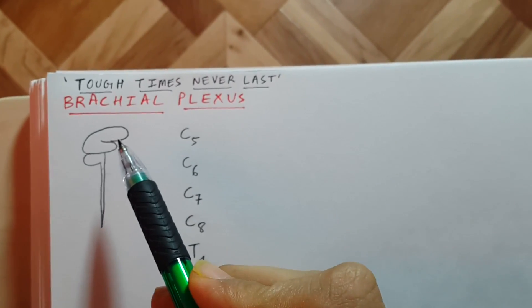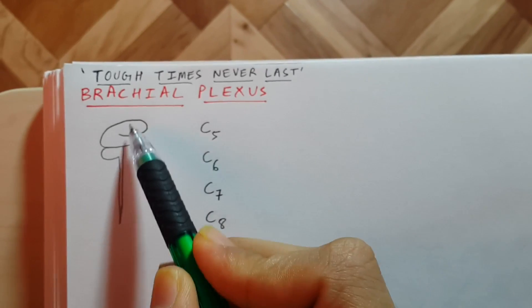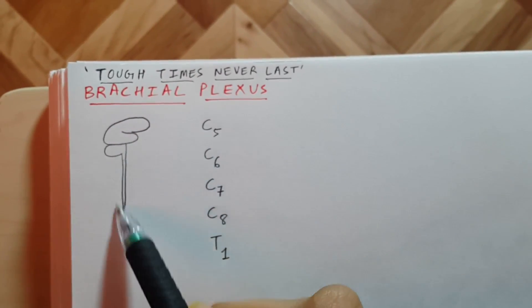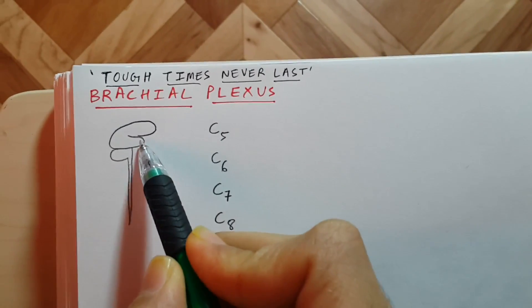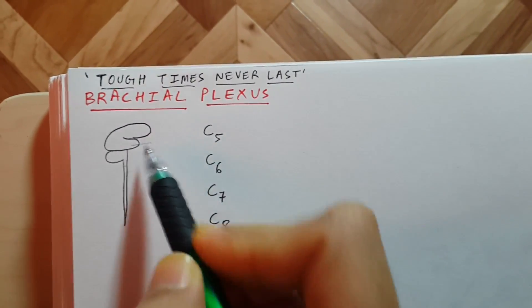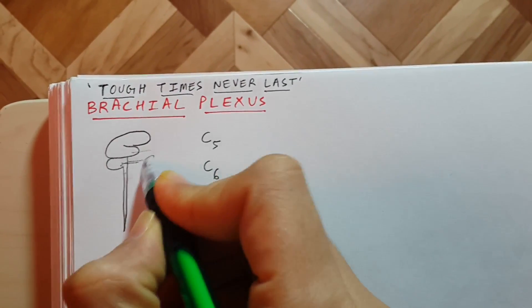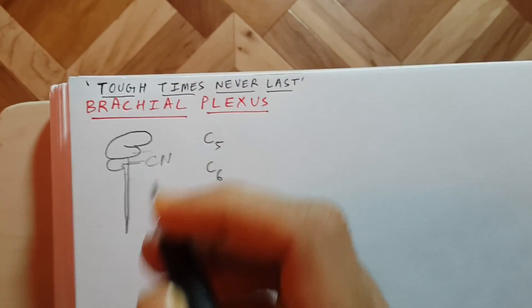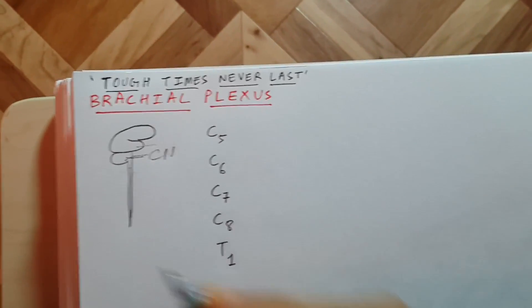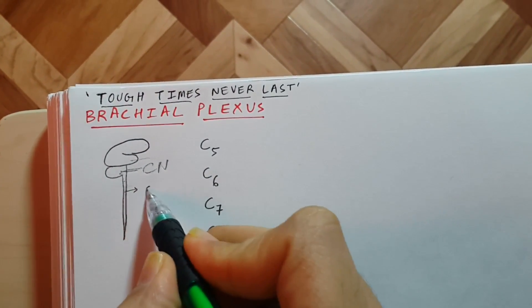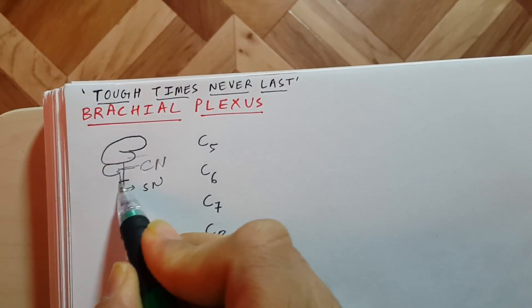Today we will be discussing brachial plexus. Let's say this is the brain and this is the spinal cord. All the nerves coming out of the brain are cranial nerves, and the nerves coming out of the spinal cord are spinal nerves.